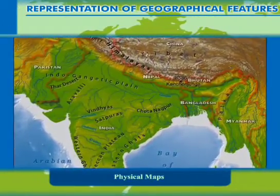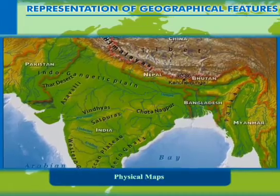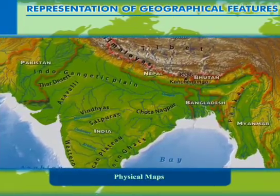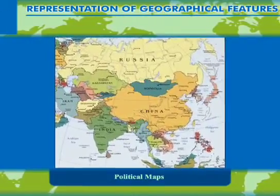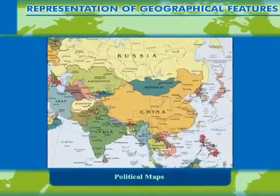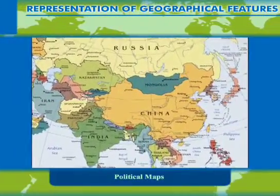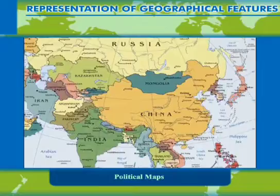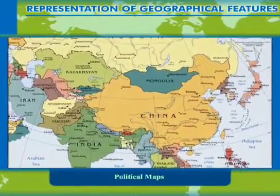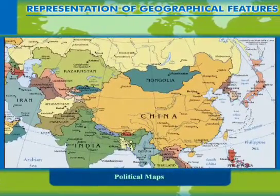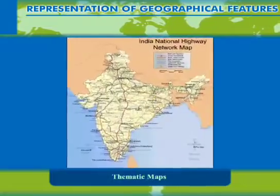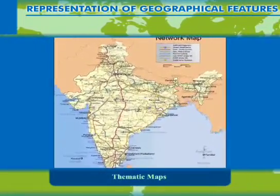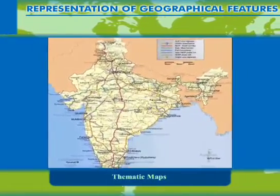Physical maps show the natural features of the earth like mountains, plains, plateaus, water bodies, etc. Political maps show the political divisions of the earth — countries, states, and cities are marked along with their well-depicted boundaries.